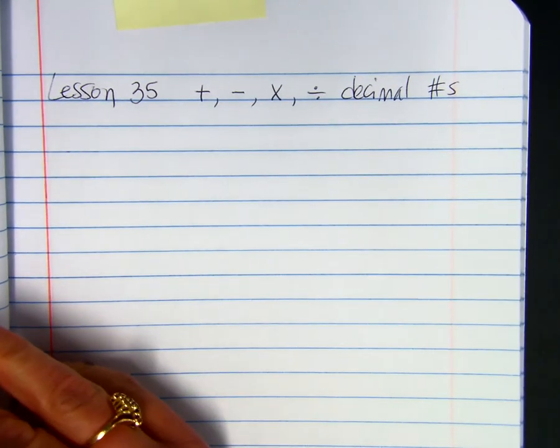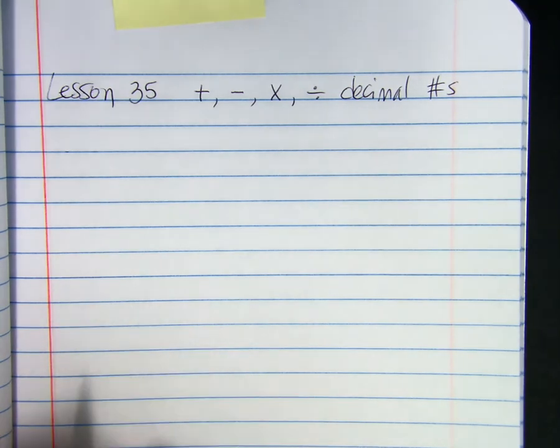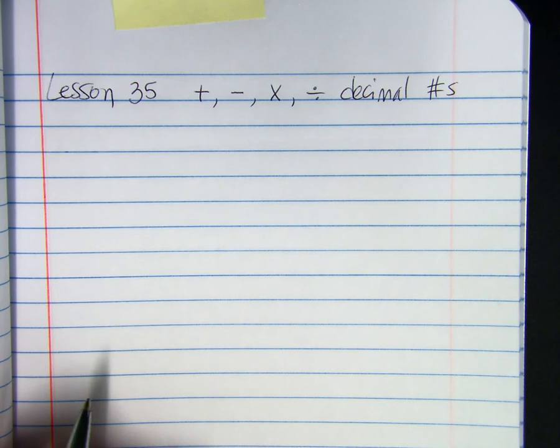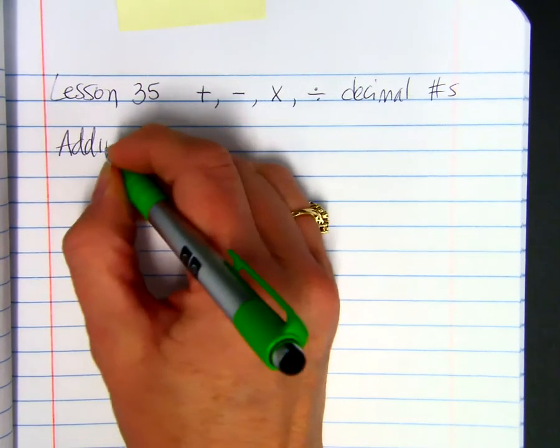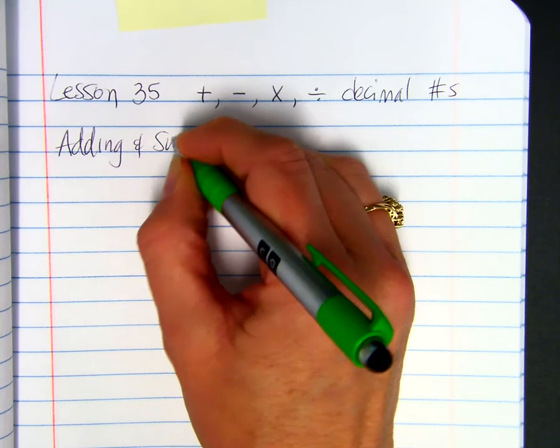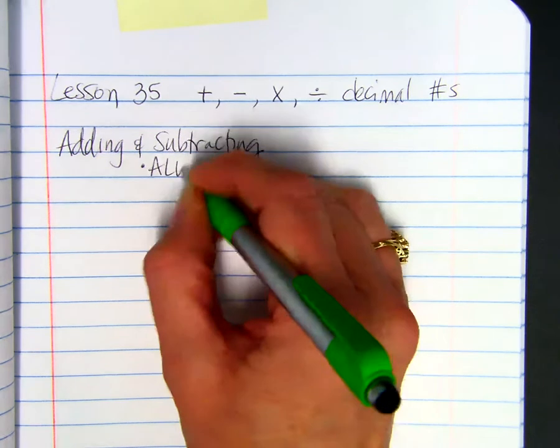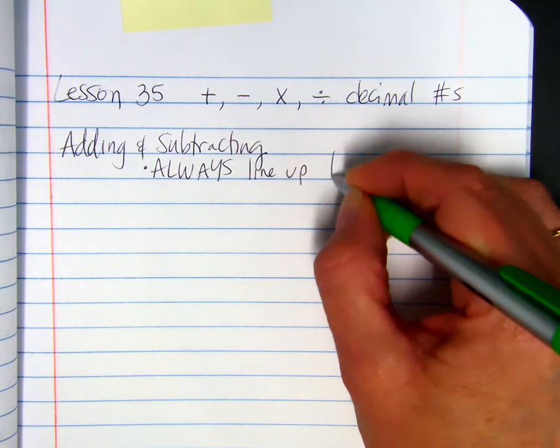So, we'll begin with adding and subtracting. One thing you have to remember, when you have decimal numbers and you're adding and subtracting, you always want to line up the decimals. So, for adding and subtracting, always line up decimals.